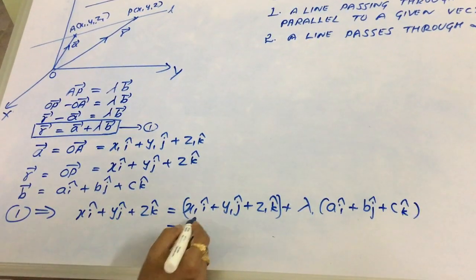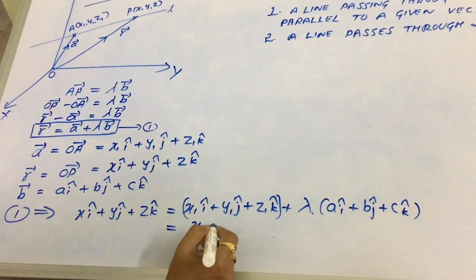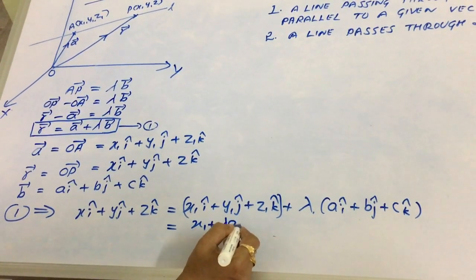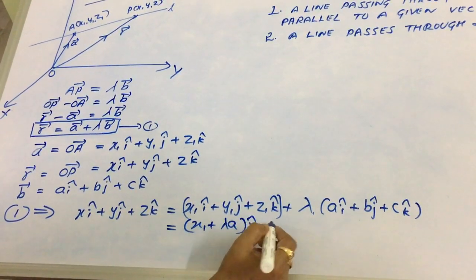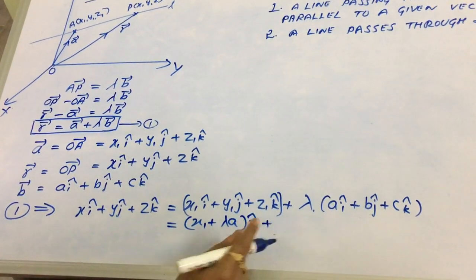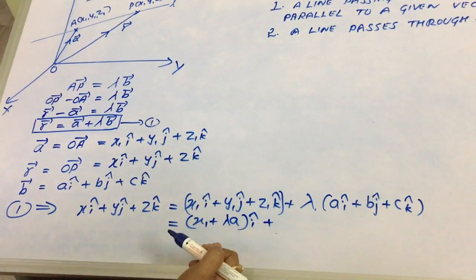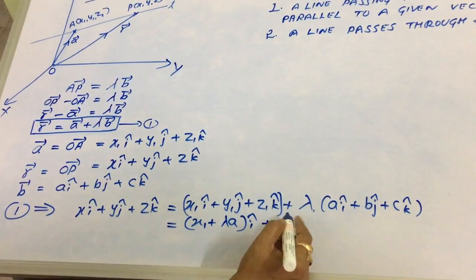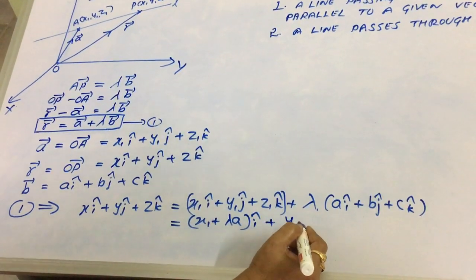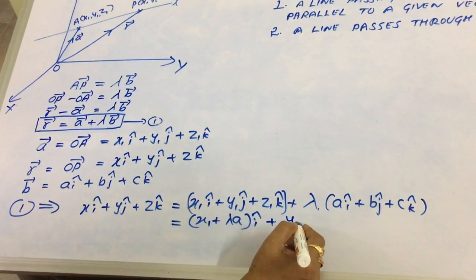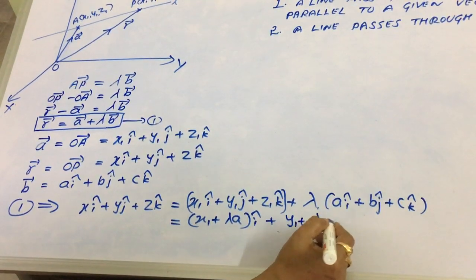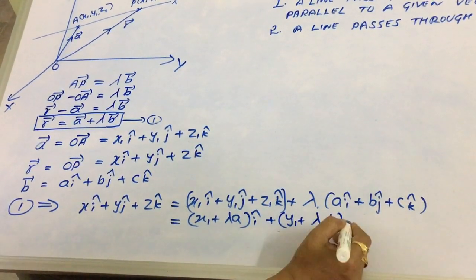If we simplify, we will get x1 plus lambda times A of i-cap. That means combining all i-coefficients together. Similarly, combine all j-coefficients together, so we get y1 plus lambda times B j-cap.